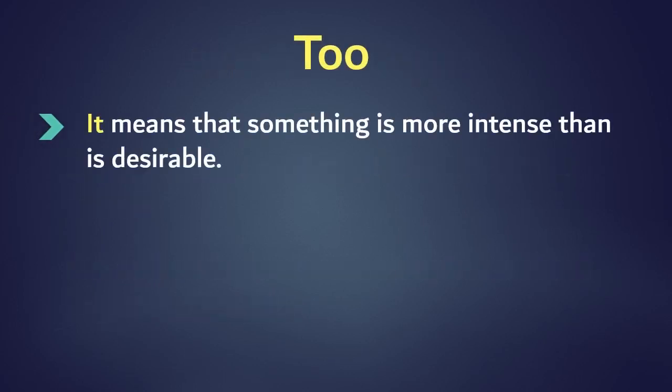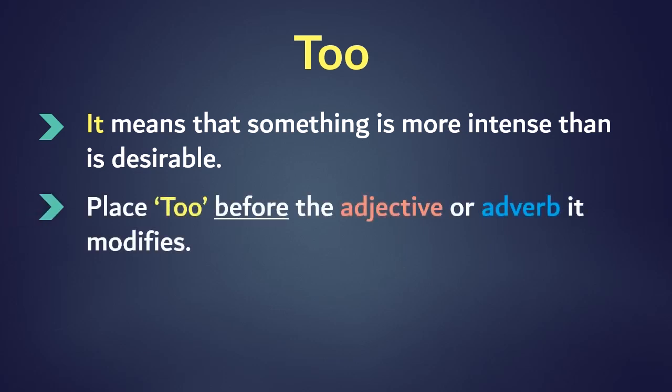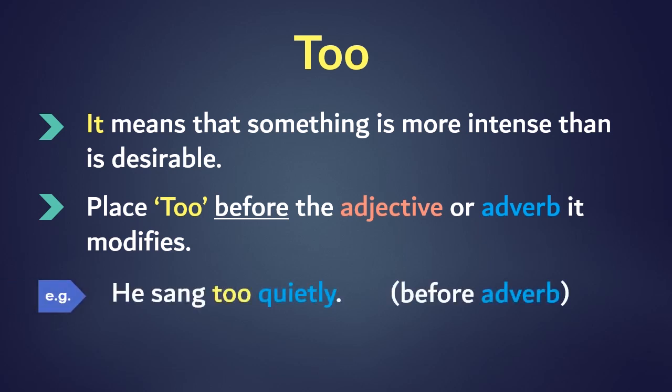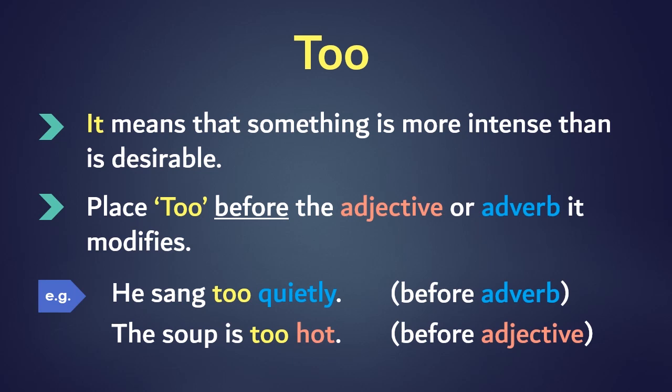Too means that something is more intense than is desirable. Place too before the adjective or adverb it modifies. For example, he sang too quietly. The soup is too hot.